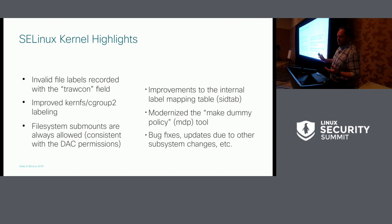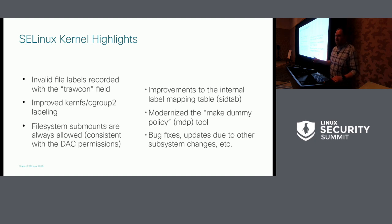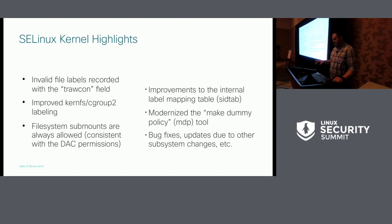To start off with the kernel, probably the big highlights — and especially the biggest ones that you're most likely to see from user space — is that now whenever there's a file operation that gets denied because of an invalid file label, we'll actually print that invalid file label using the trawcon field in the audit record. So that can be a nice debugging and diagnostics tool. We also have proper cgroup 2 labeling, which is built on top of current FS, which presents some interesting challenges, but that's done and working now.